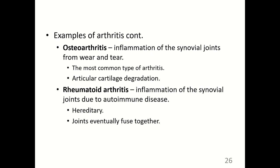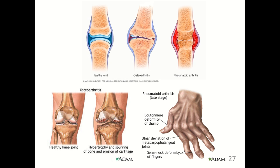Osteoarthritis is the inflammation of the synovial joints from wear and tear. It is the most common type of arthritis and results in the degradation of the articular cartilage. Rheumatoid arthritis is the inflammation of the synovial joints due to an autoimmune disease; it is hereditary, and the joints will eventually fuse together. The illustration shows a healthy joint, osteoarthritis, and rheumatoid arthritis. Rheumatoid arthritis in late stages typically presents with deformities such as the swan neck deformity of the fingers and a boutonnière deformity of the thumb.